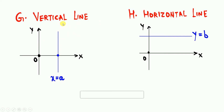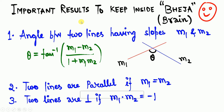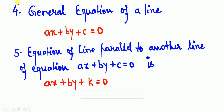Special cases: the equation of a vertical line is x = a, and the equation of a horizontal line is y = b. Can you tell me the equations for the y-axis and x-axis? Comment in the comment box. For important results: the angle between two lines with slopes m1 and m2 is θ = tan⁻¹ |(m1 - m2) / (1 + m1·m2)|. Two lines are parallel if m1 = m2, and perpendicular if m1 × m2 = -1.